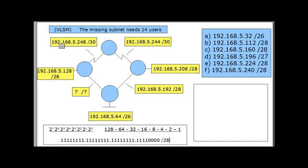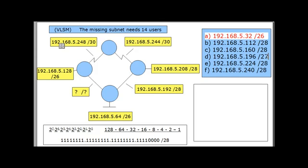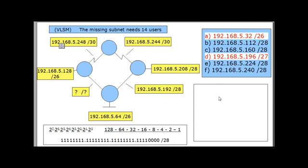So the correct answer is going to be a /28. Right away we can eliminate the /26 answer — that's wrong — and the /27 answer is also wrong. We're now looking at answers B, C, E, or F, and we'll examine the diagram further to narrow it down.